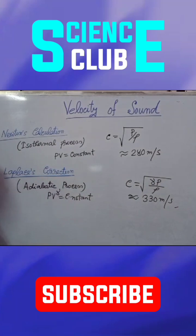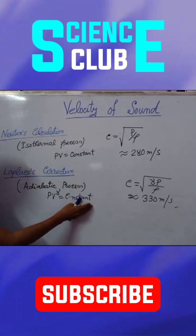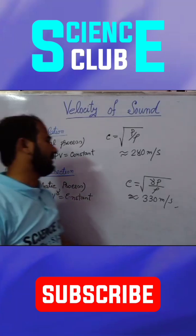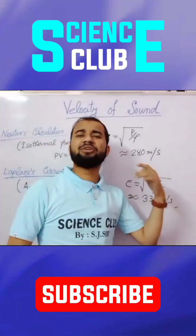This correction is given by Laplace. According to Laplace, propagation of sound in air medium is an adiabatic process. The relationship is given by PV^γ = constant. From here, the calculation is 330 meter per second.